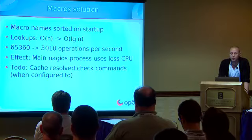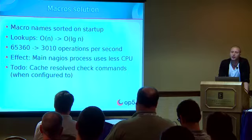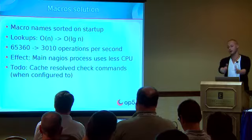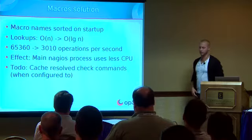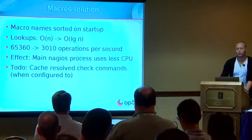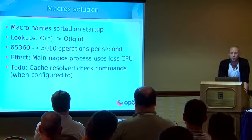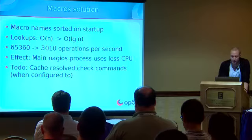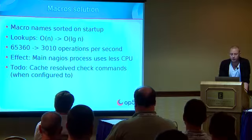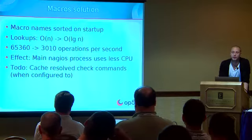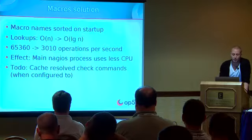For macros, we sort the macros once at startup, and instead of a linear search we do a binary search - a logarithmic operation that divides the result set by half every lookup. We move from 65,360 down to 3,010 operations per second. We could improve further but it's no longer a bottleneck. The worker processes have a perfect hash algorithm for parsing check results, but that runs more often so we haven't touched it.